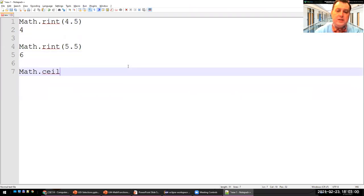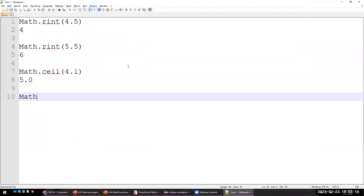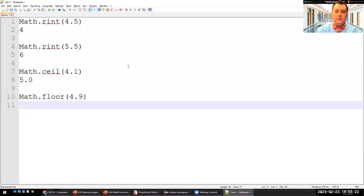Ceiling always returns the ceiling. So ceiling of 4.1 is 5.0. You're basically always rounding up. In the case of floor, rounding down. So math dot floor of 4.9. It doesn't matter that it's so close to 5. It rounds down to 4. So ceiling and floor are not going to the closest integer. They are basically not rounding. They are the ceiling and the floor as opposed to rounding, which is basically the closest.